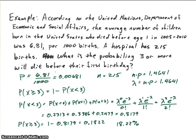All right, so here we kind of have a sad situation here. I went to the United Nations Department of Economic and Social Affairs website, and on there they have the mortality rate for children. And one of the parameters that they give is the average number of children that die before the age of one.